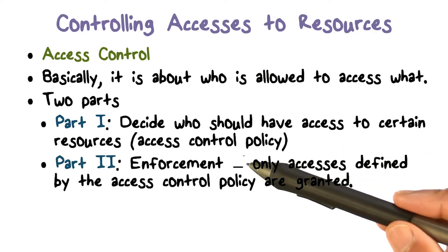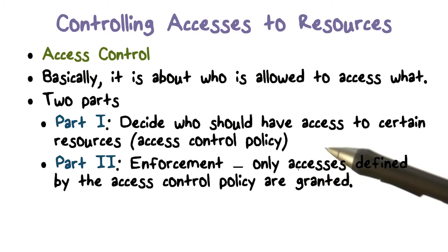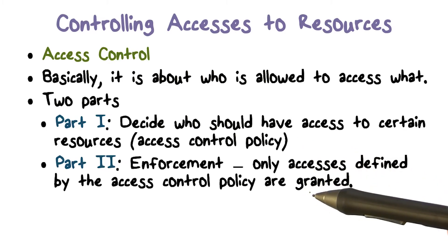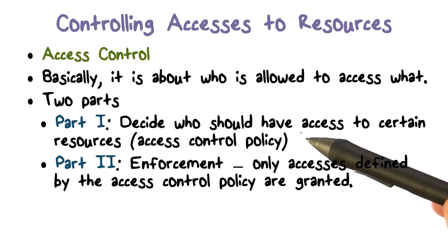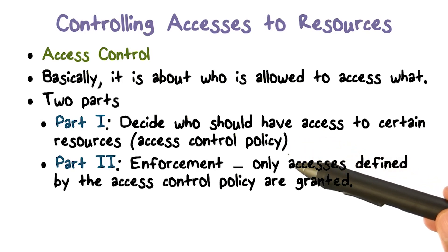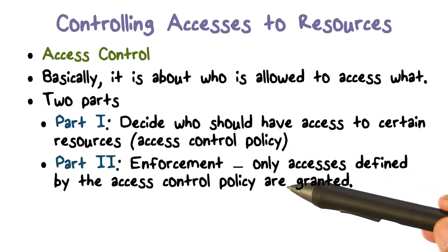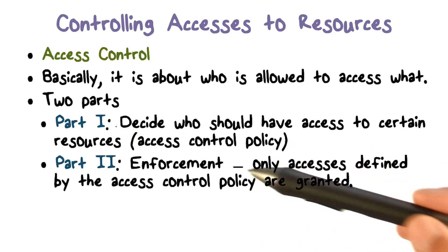Once you do that, part two is about enforcement. The system has to monitor each request for these resources, and based on the policy that tells us who can access what, it should make sure that any accesses allowed are consistent with the policy. Enforcement basically ensures there is no way to access a resource when that access is not allowed by the policy. So define the policy — that's part one — and then enforce the policy — that's part two.